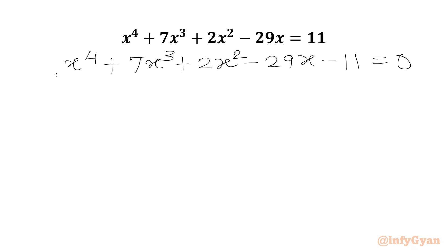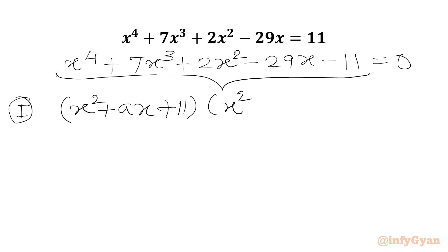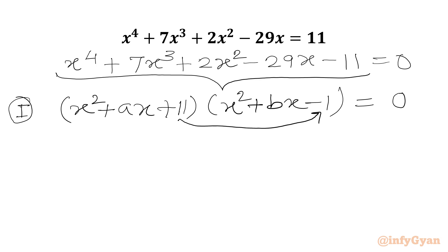Now I will write our LHS quartic expression in terms of the product of 2 quadratics. So I will generate 2 cases here. In Case 1, I will consider the multiplication of (x² + ax + 11) with (x² + bx - 1). We will get the constant -11 once we multiply these two.